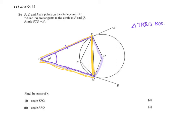In simplified form, 180 divided by 2 gives 90, and X divided by 2 gives X over 2. So the angle TPQ is 90 minus X over 2 degrees.